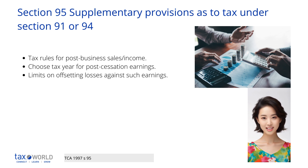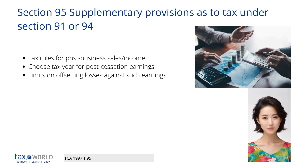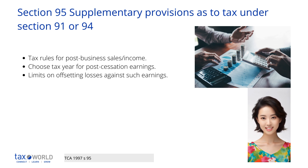You can choose to be taxed on money received after your business has stopped, either in the final year of business or in the year you switch accounting methods. This choice can only be made if you receive the money within 10 years after the cessation or change, and must be declared within two years from the end of the tax year when the money was received. This option helps to set off the money against losses carried forward and capital allowances in the final year or year of change, rather than the year of receipt.